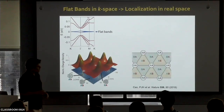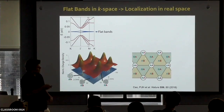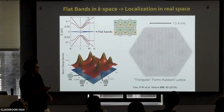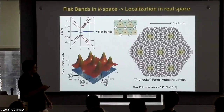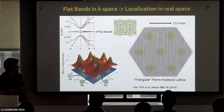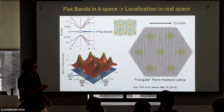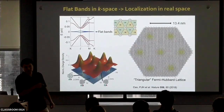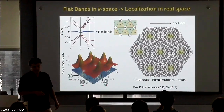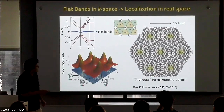Schematically, looking from the top, you have these AA spots forming a hexagonal lattice with charge preferentially localized there, separated by AB and BA stacking regions. The separation between AA spots is 13.4 nanometers. This is what will be our triangular — or in quotes, because in reality the AB and BA regions are not identical — honeycomb Fermi-Hubbard lattice, a triangular lattice with a two-plaquette basis.